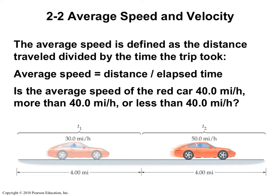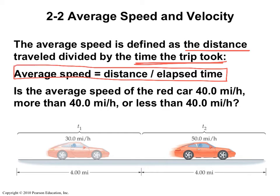Alright, so speed and velocity are going to be our main things that we're going to be talking about in this unit. The average speed is the total distance traveled divided by the time the trip took. So average speed is distance divided by elapsed time.